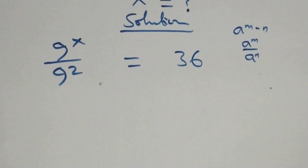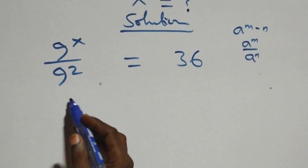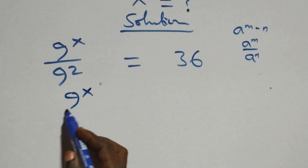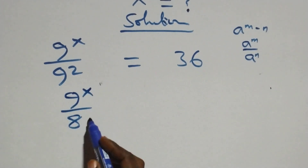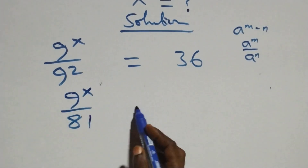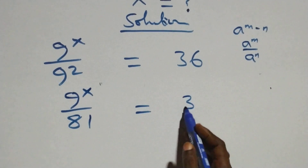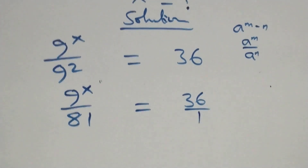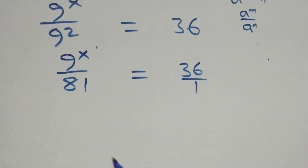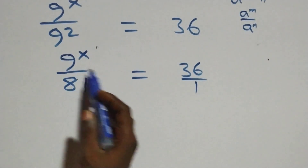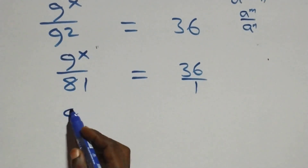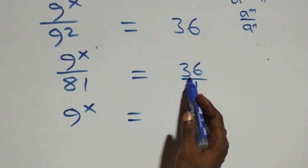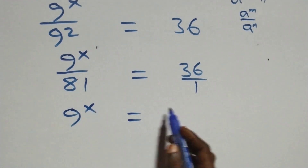We can also write this as 9 raised to power x over 9 squared — 9 times 9, that is 81 — then equals to 36 over 1. The next step: we cross multiply, giving 9 raised to power x equals 36 times 81.